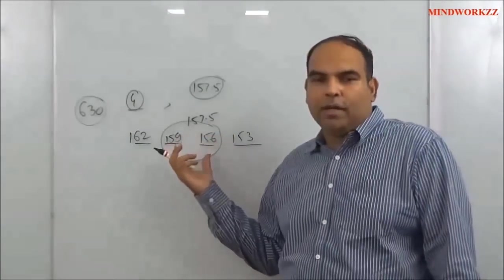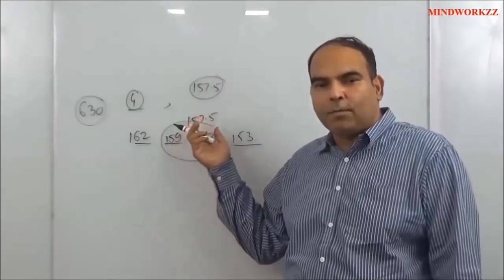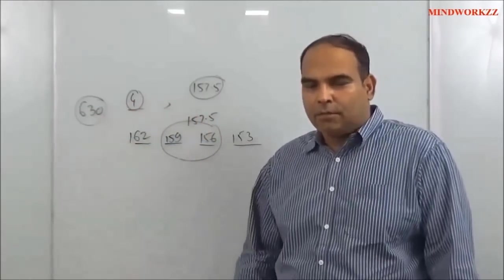You don't need to do that in the exam. You just need to understand that you can actually build these two terms and you'll be able to build the AP. And since you have managed the average to be 157.5 for 4 terms, the sum has to be 630. So 4 terms is possible.